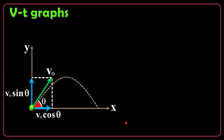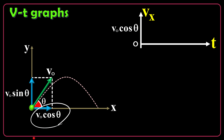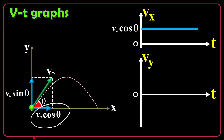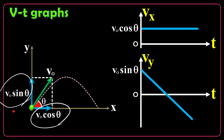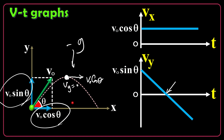VT graphs are very important and I often use the VT graph approach in my solutions because it's much easier. The object is not acted by any horizontal force, so vx will be constant. If it started with v0 cosine of theta, it will remain so — a horizontal line on the VT graph with no slope because horizontal acceleration is zero. Vy is different. For the case where the object has an initial positive vertical component, vy starts from v0 sine of theta, but the slope is negative g. This zero-crossing point is exactly the peak point, at which the velocity is entirely horizontal — just v0 cosine of theta — and vy equals zero.